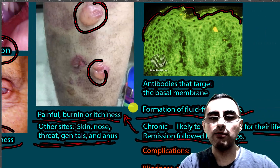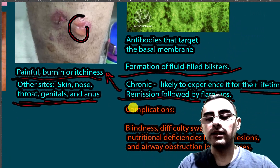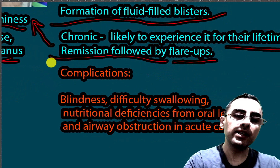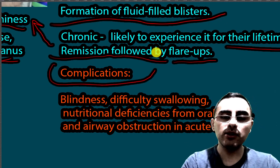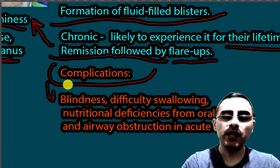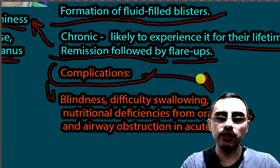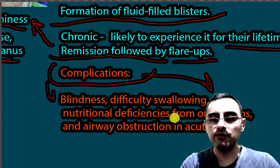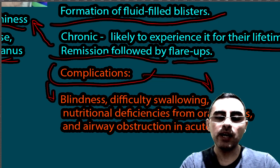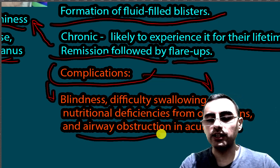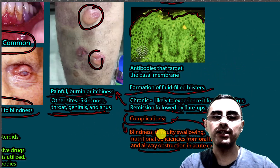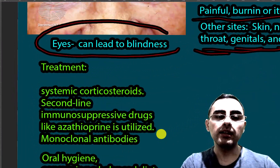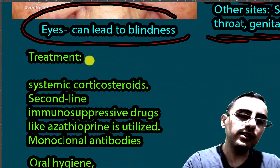Now let's discuss complications and why this disease is important. It can cause blindness, difficulty swallowing, difficulty breathing, nutritional deficiency from oral lesions, and airway obstruction in acute cases. That's why this disease can be importantly debilitating.